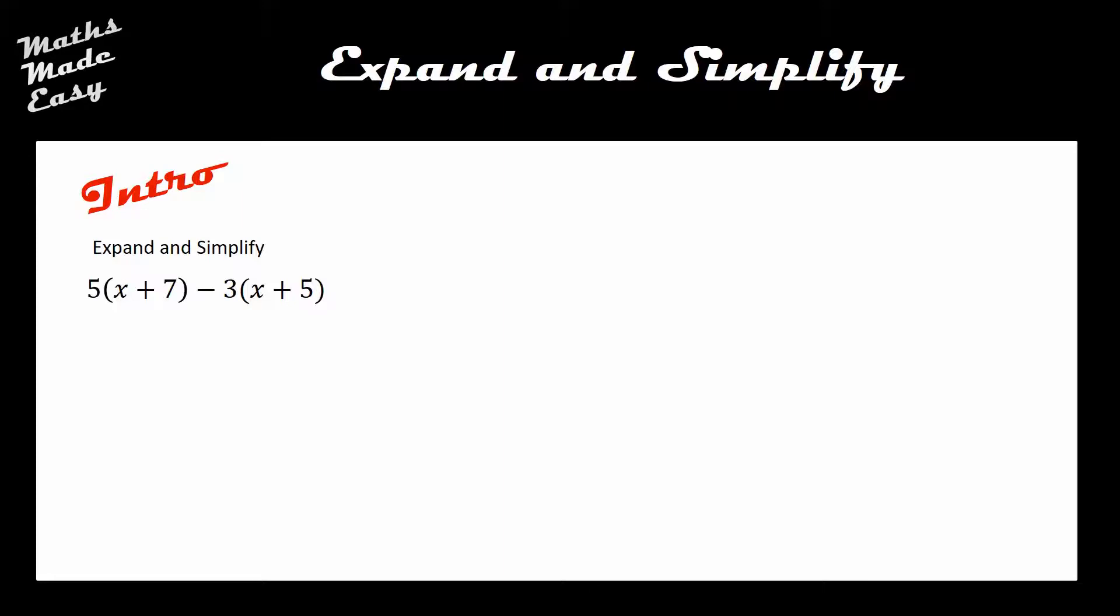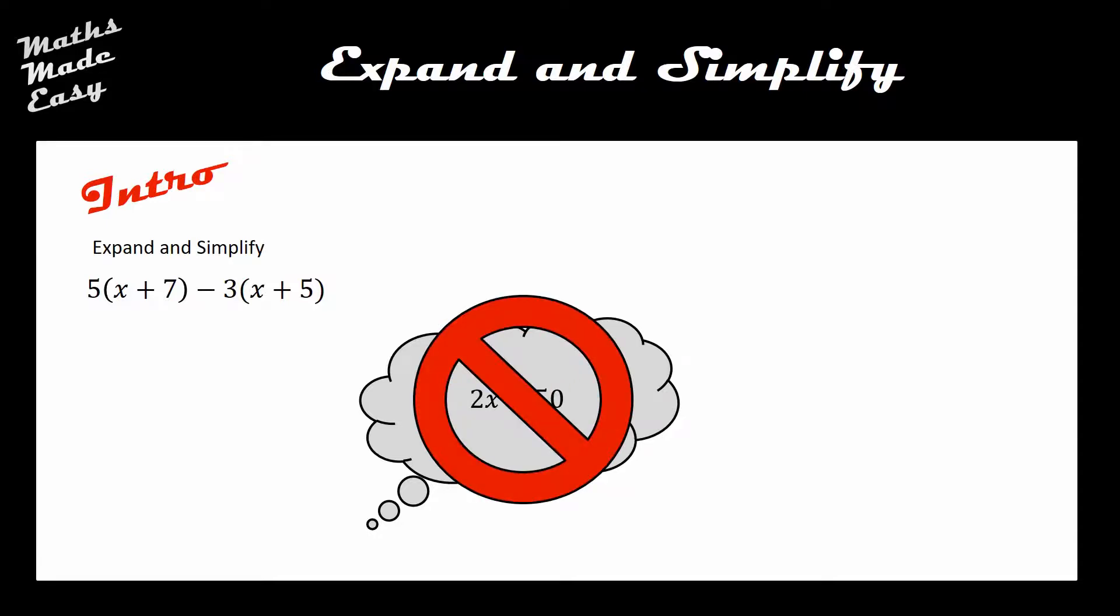Having a look at what we've got on the screen: 5 bracket x plus 7 minus 3 bracket x plus 5. Have a think about what you think the answer to this might be. If you're thinking to yourself that this is going to end up as 2x plus 50, unfortunately you've fallen into the common mistake that happens every single time on these expand and simplify questions.